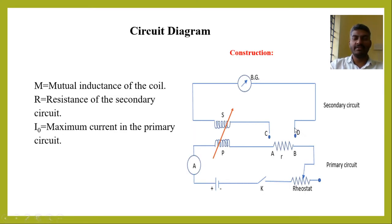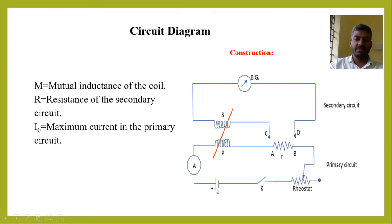The circuit connection is very simple. In this circuit diagram, we have two circuits: one is the primary circuit and another is the secondary circuit. The primary circuit has a primary coil, a small resistor connected between terminals A and B, a battery, a key, and a rheostat. By adjusting this rheostat, we can keep a steady current, which can be measured using an ammeter. I can vary the current in the primary circuit using this rheostat.